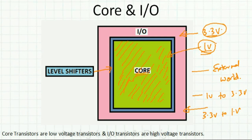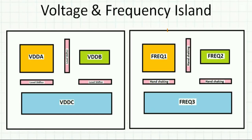To save power further, we can have different circuits operating at different voltages — some at 3.3V, some at 2.5V, and some at 1V — instead of running everything at 3.3V. We identify and isolate these circuits into separate voltage domains, and place level shifters wherever signals need to cross between these different voltage domains. These are called voltage islands.